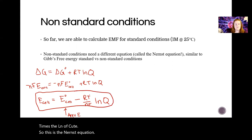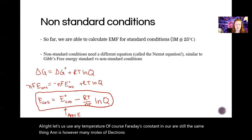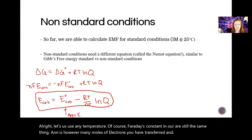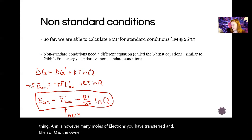that part comes from Appendix E, E cat plus E an. And it's going to be minus RT divided by NF times the ln of Q. Okay, so this is the Nernst equation. All right, and it lets us use any temperature. Of course, Faraday's constant and R are still the same thing. N is however many moles of electrons you have transferred and ln of Q is the ln of the ratio of products to reactants.